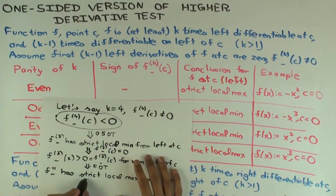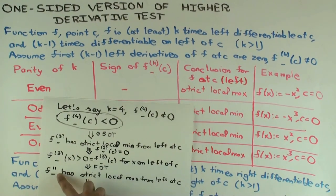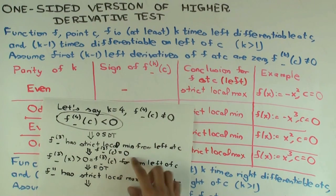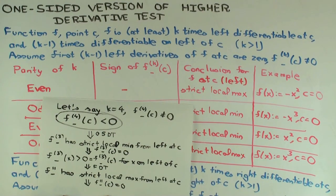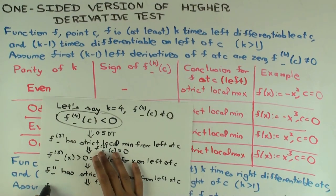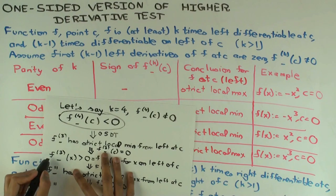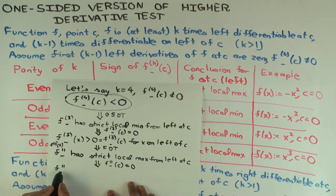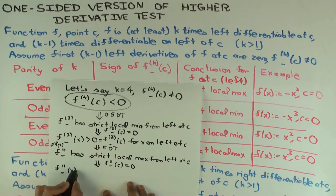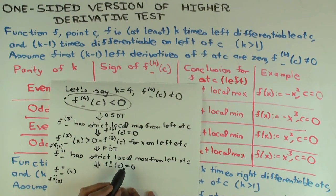Now, f''(c) = 0 by assumption, and because f'' has a strict local maximum from the left, the value on the immediate left is less than 0. Because the function is two-sided differentiable on the left of c, we can write this as f''(x) for x on the immediate left of c. So f''(x) < 0 on the immediate left of c.